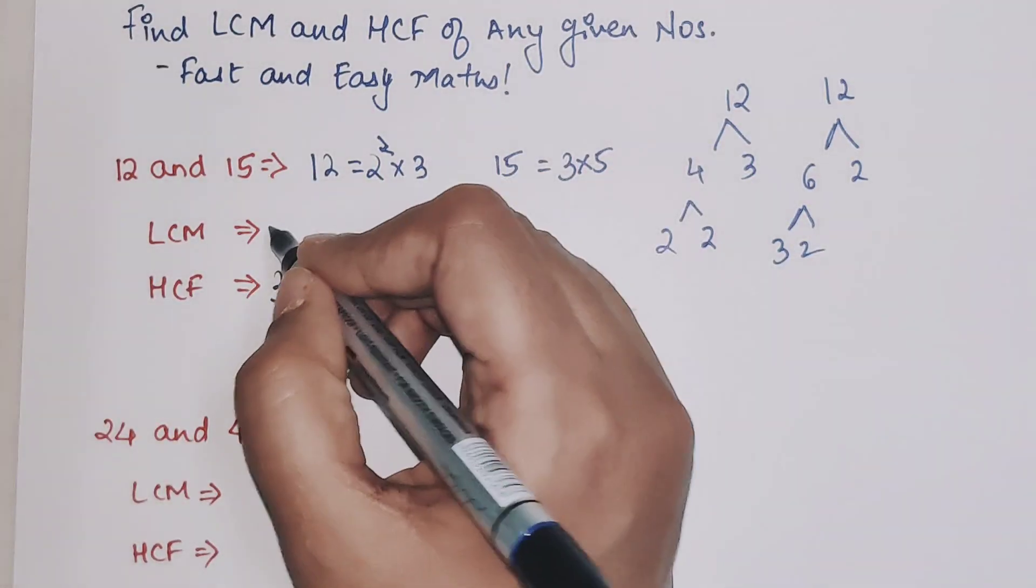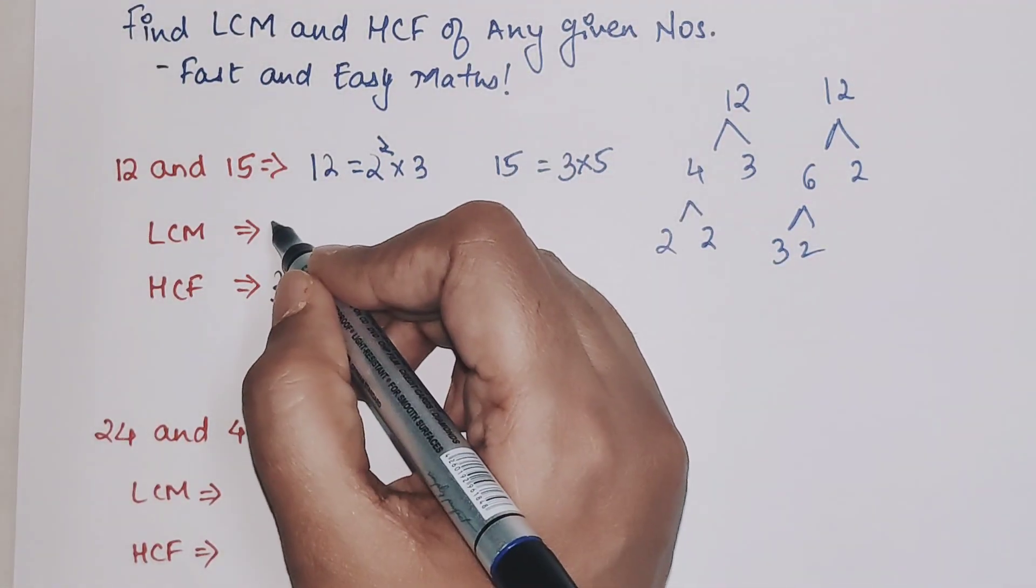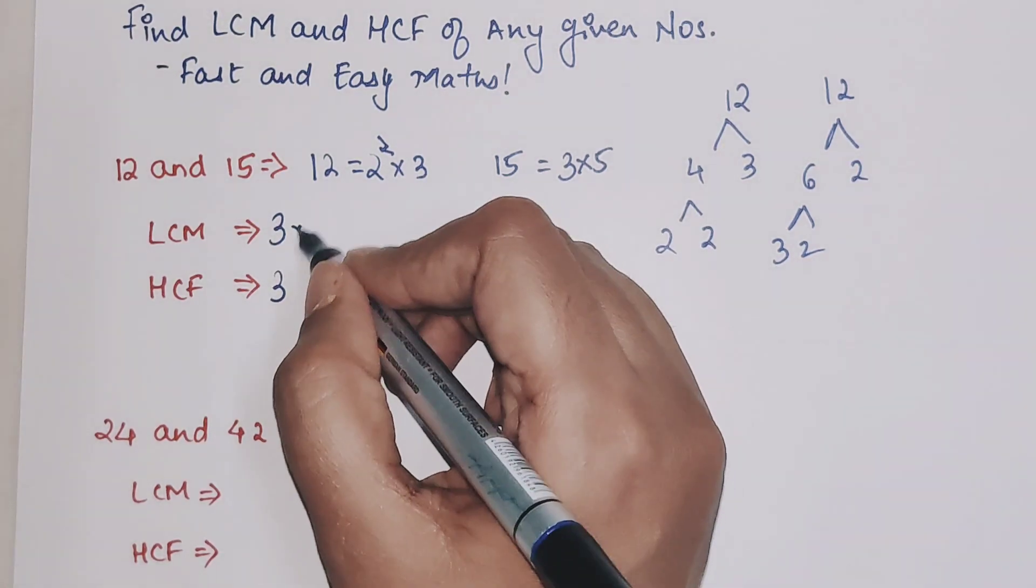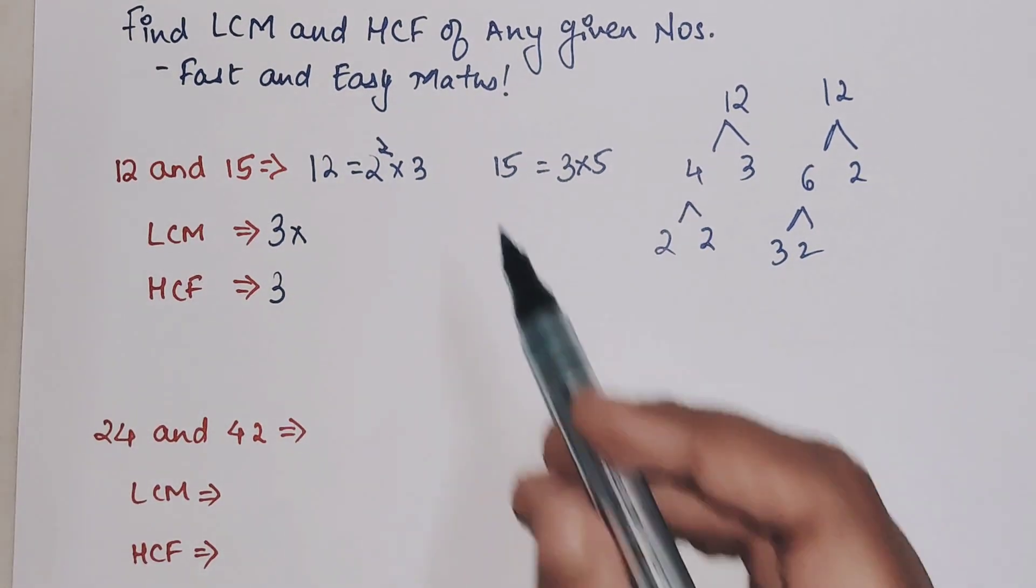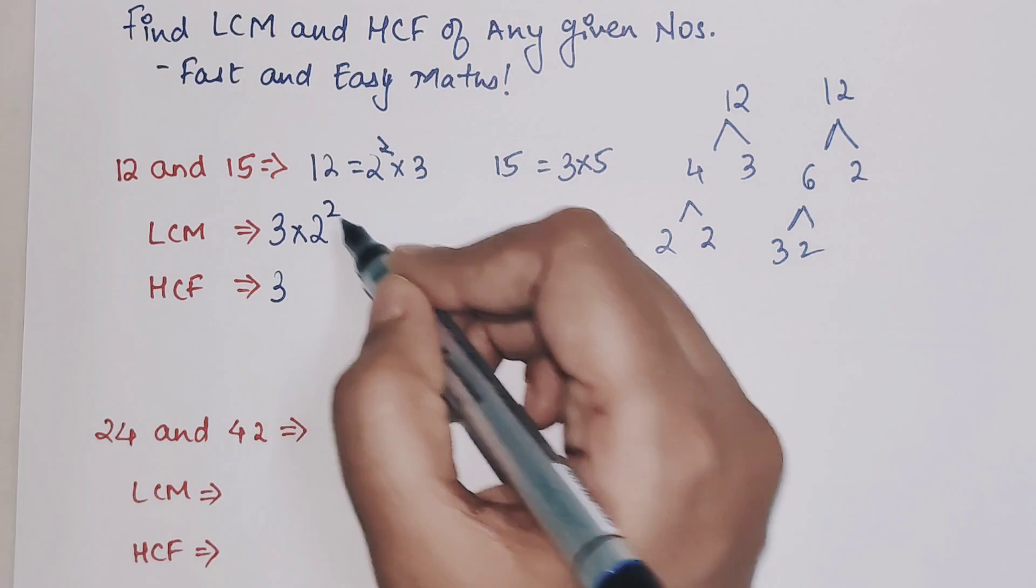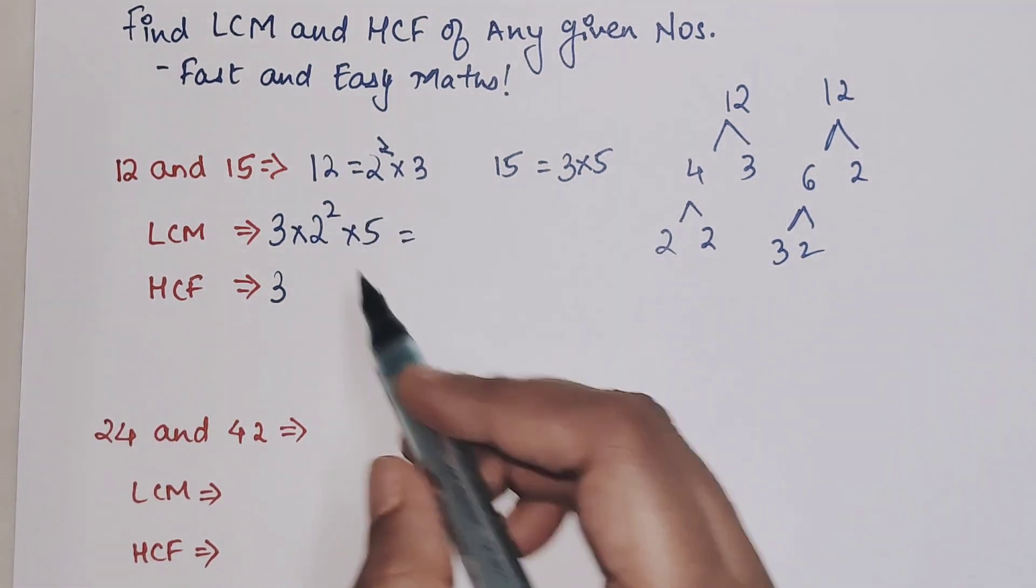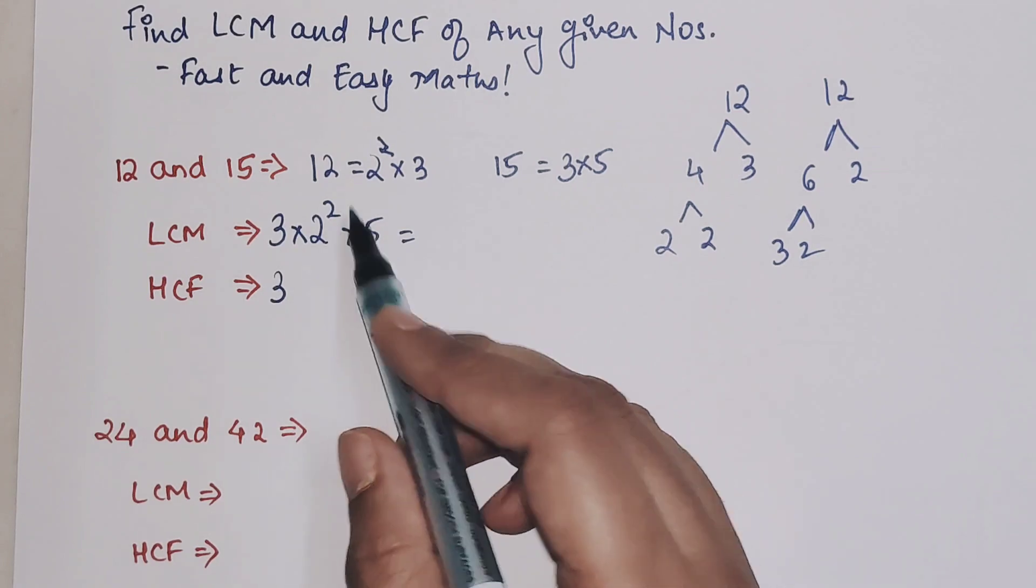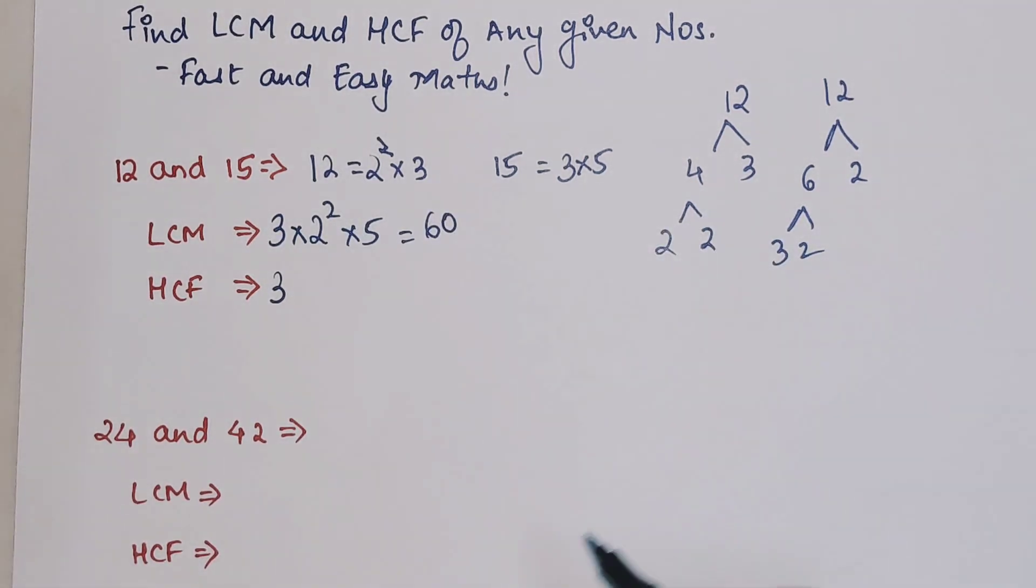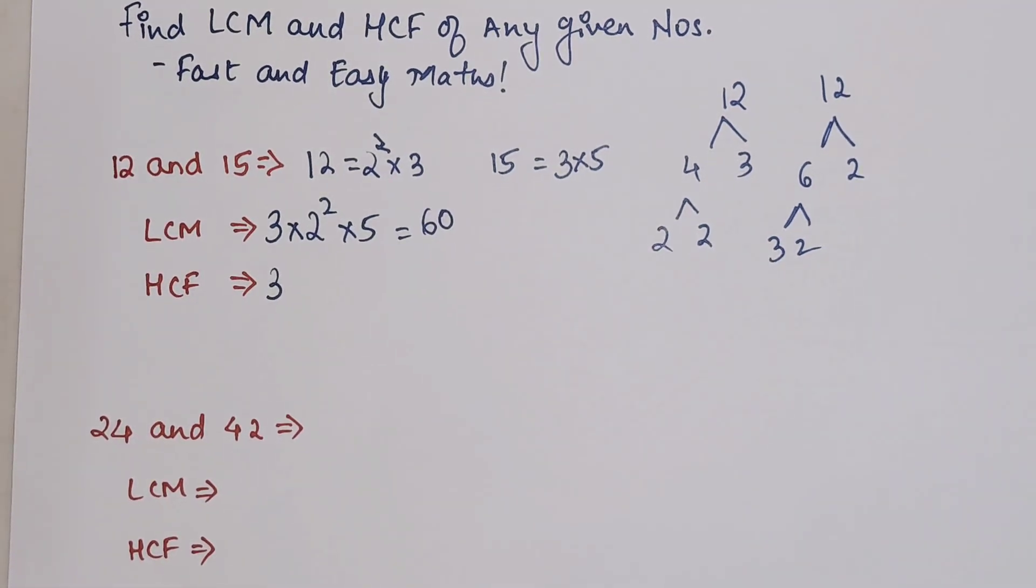Now what will be your LCM? LCM is writing down your HCF, that is 3, and then writing down the leftover numbers - 2² into 5. So this comes out to be 3 into 5 is 15, 15 into 4 gets you 60. That is your LCM for 12 and 15.